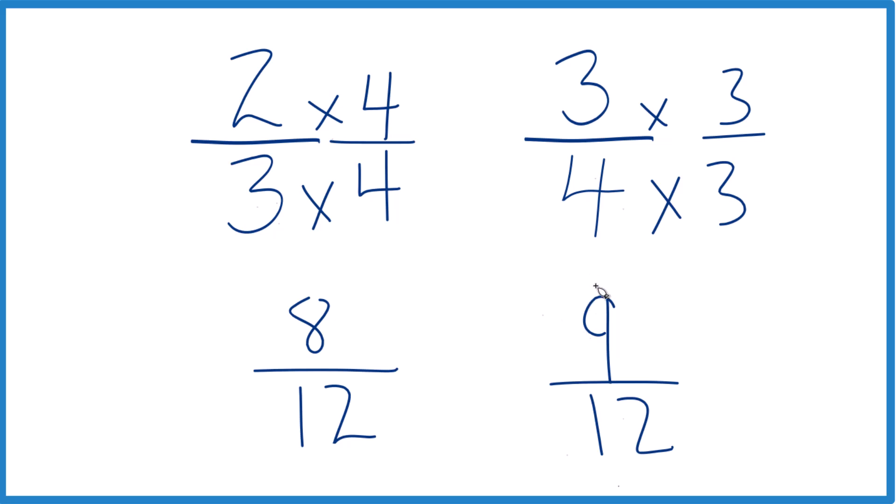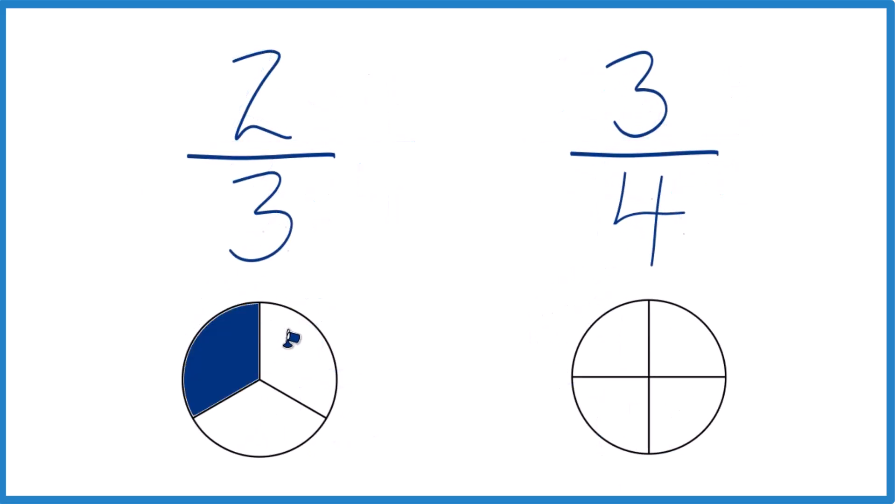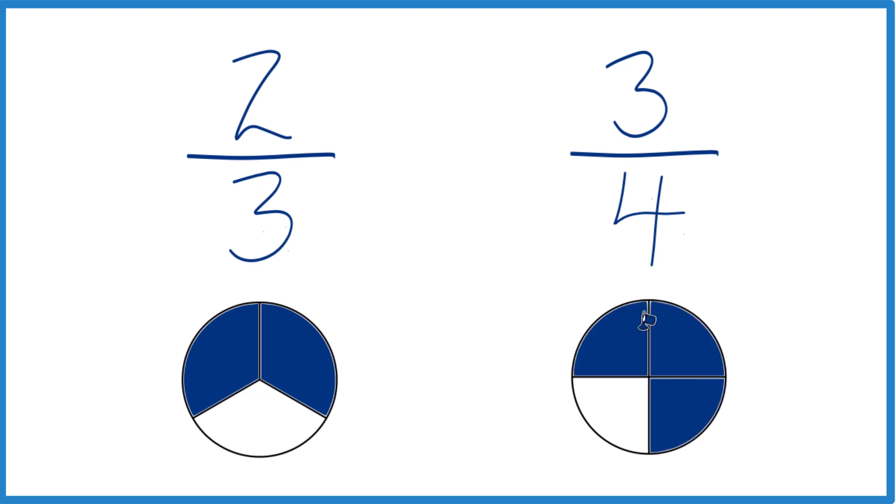And you can think of it this way. We have one-third, two-thirds, and over here we have one-fourth, two-fourths, three-fourths, and you can see the area colored in, that's greater.